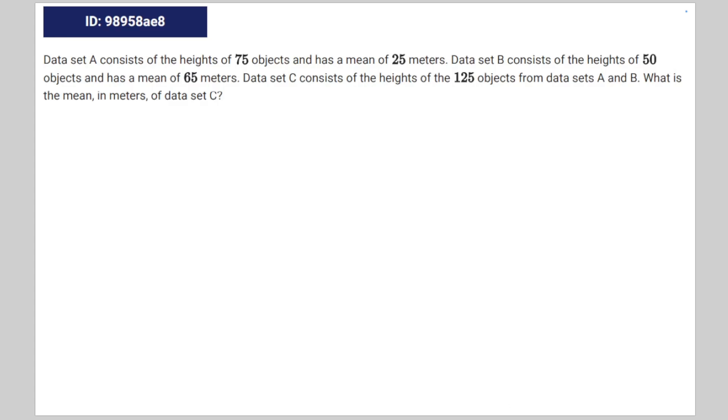So we're given the following math problem. Dataset A consists of the heights of 75 objects and has a mean of 25 meters. Dataset B consists of the heights of 50 objects and has a mean of 65 meters. Dataset C consists of the heights of 125 objects from datasets A and B. What is the mean in meters of dataset C?